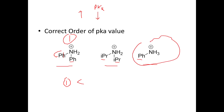Compared to compound one, compound three is a little less acidic and has a higher pKa value. This is because compound three has only one phenyl group attached. Compared to two electron-withdrawing phenyl groups, one phenyl group has a lesser electron-withdrawing effect, so compound three is more stabilized than compound one. It will lose the proton less easily, so compound three has an intermediate pKa.